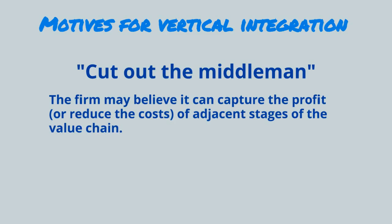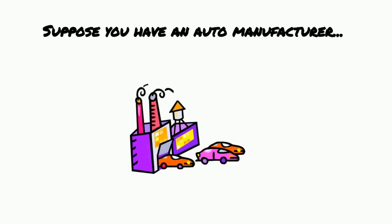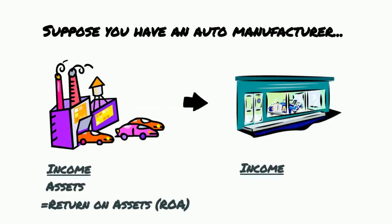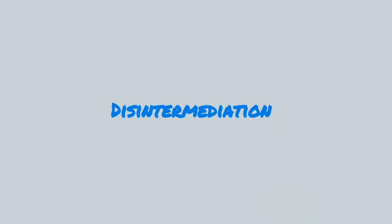Sometimes managers justify vertical integration by saying they're going to cut out the middleman and keep the profits the middleman would make, but this only works in very specific situations. For example, an auto manufacturer buying steel and selling cars through dealerships — the cut-out-the-middleman argument often breaks down because people forget the assets required to be the middleman and forget about competition in that market. It takes assets like stores and inventory to generate a return as a dealer, and unless you can do that better than they can, odds are you won't increase your profitability. The exception is called disintermediation — this happens when you don't need all of the assets of the intermediary anymore.